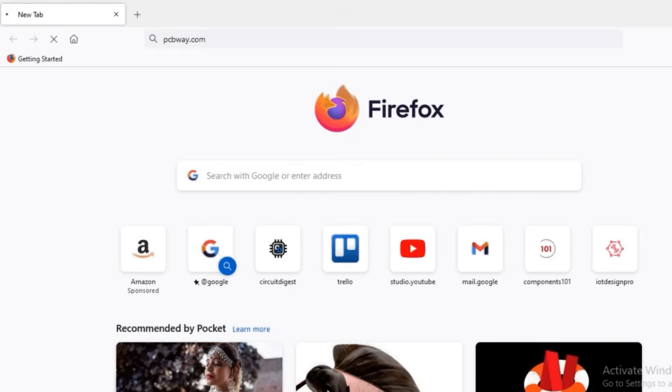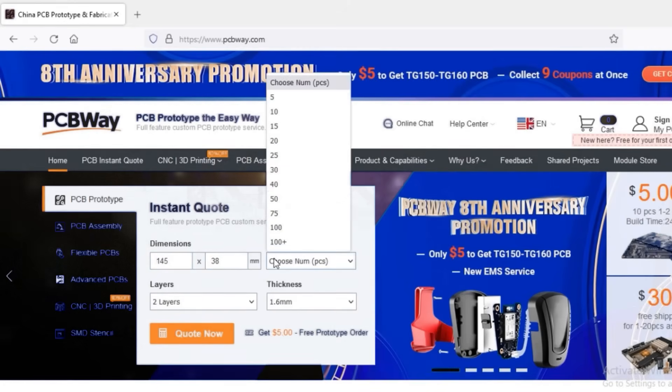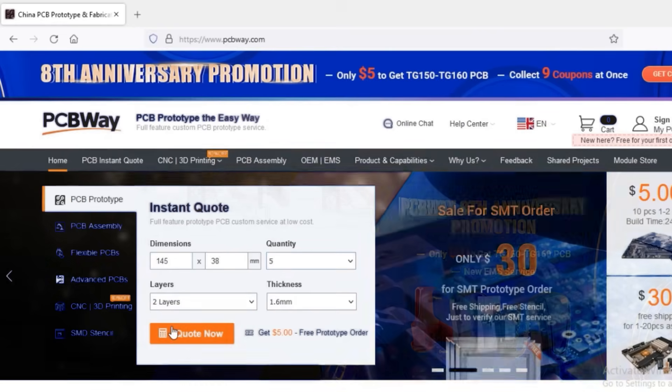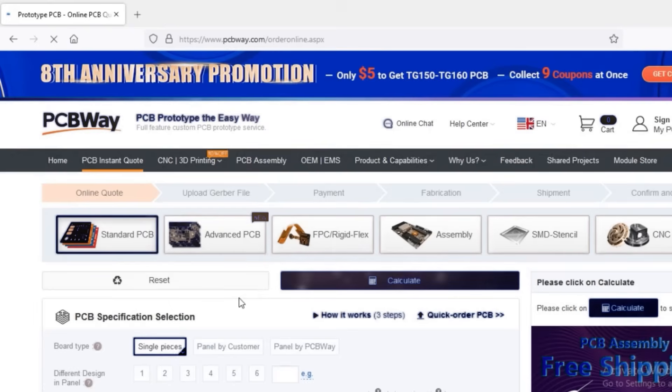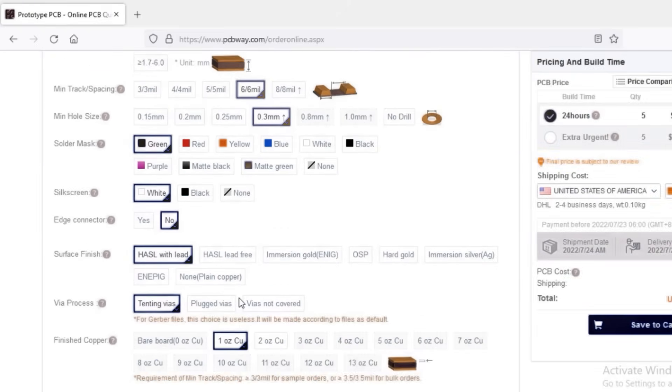To do that we recommend pcbway.com. Get over to their website, enter the dimensions of your PCB, upload your gerber file, make the payment online, and within a few days your PCBs arrive directly to your doorstep.